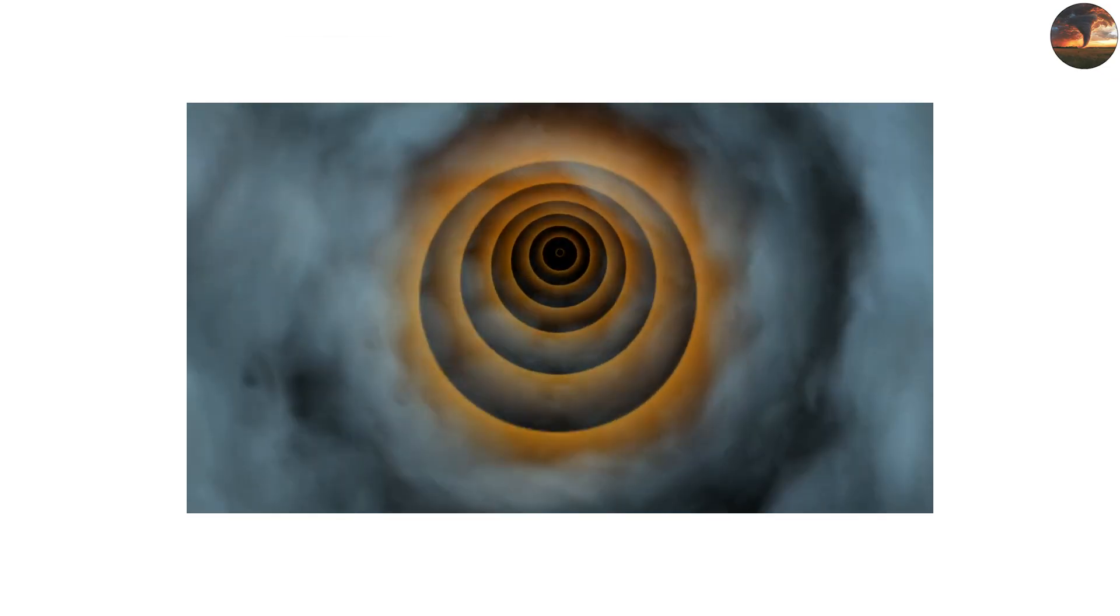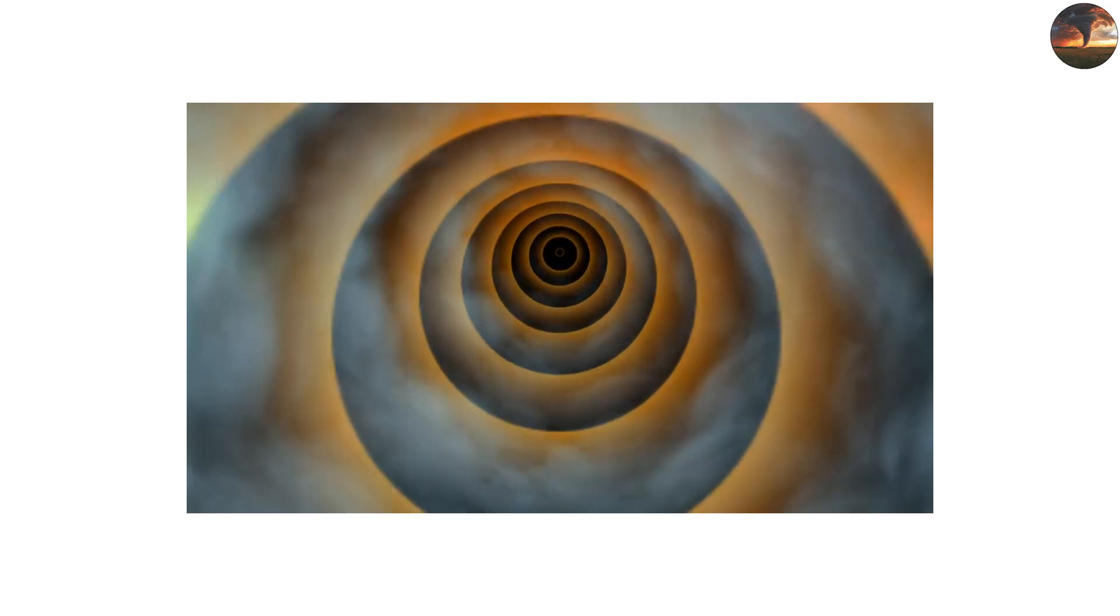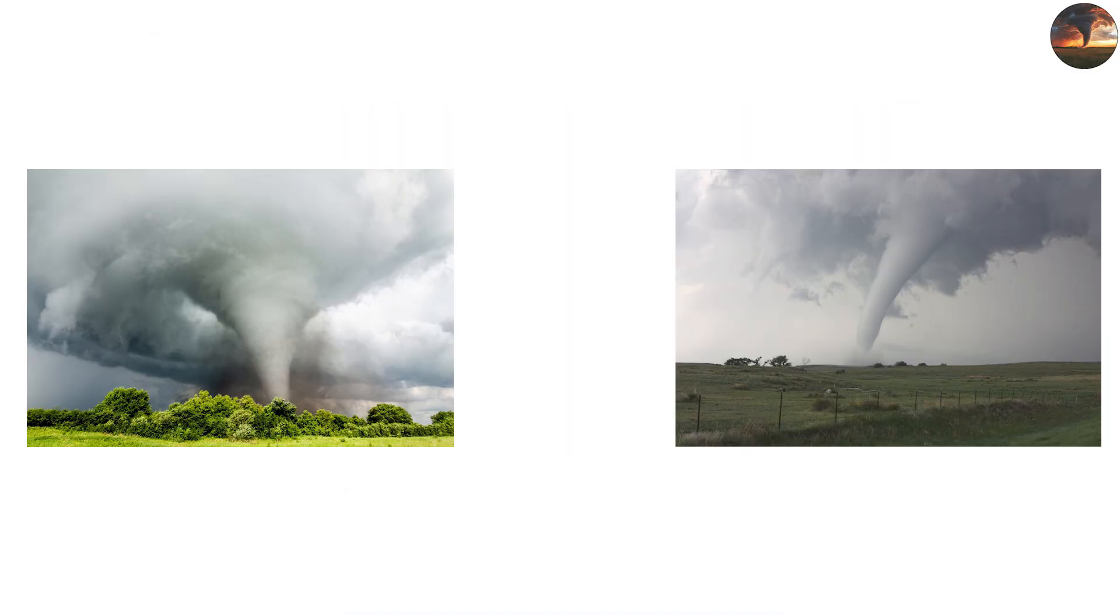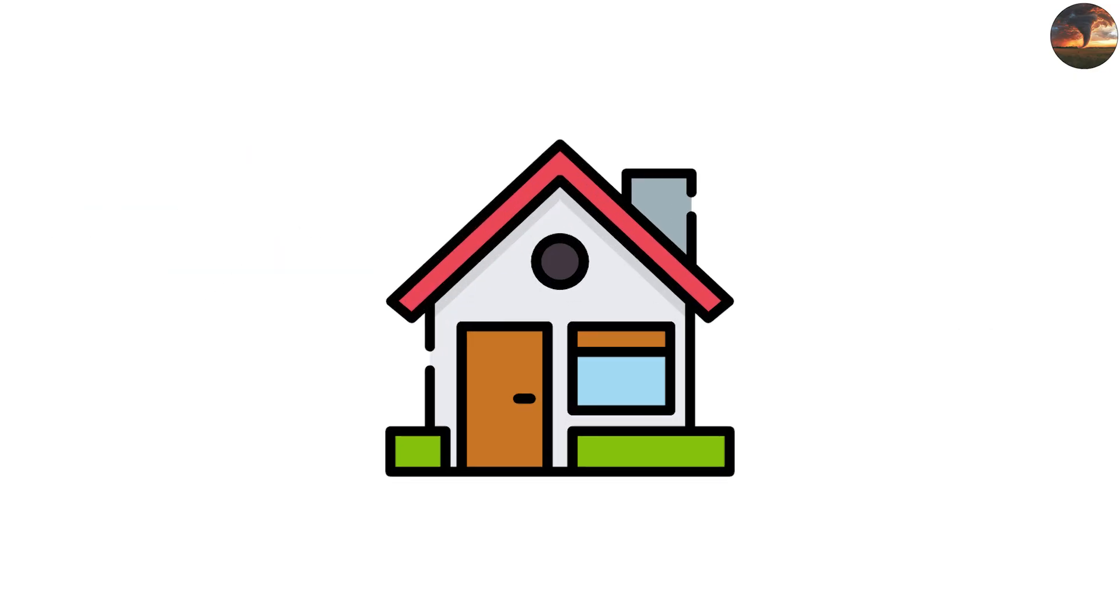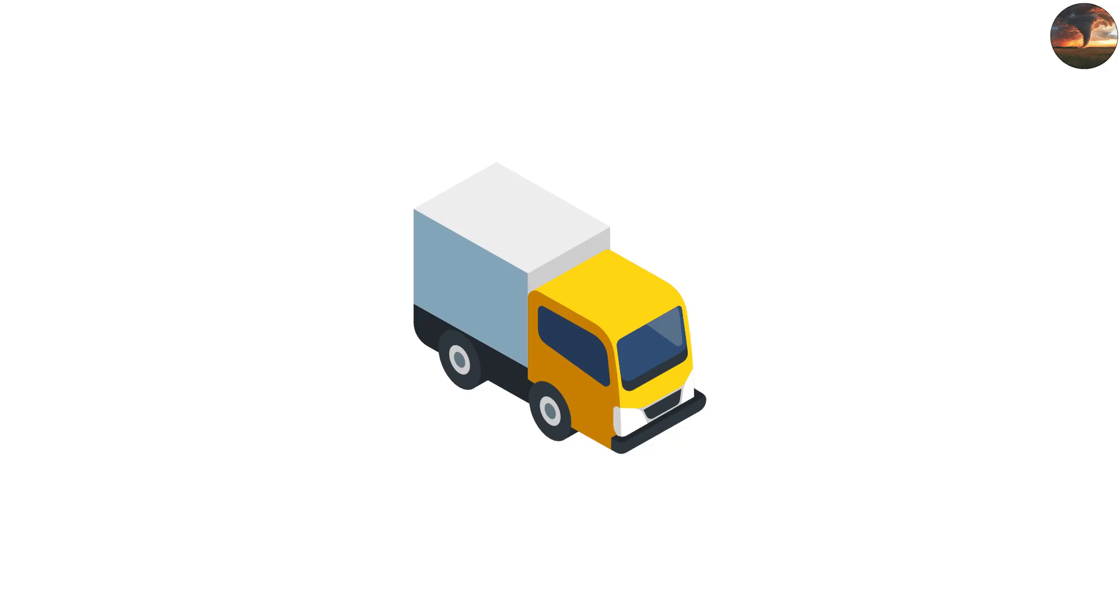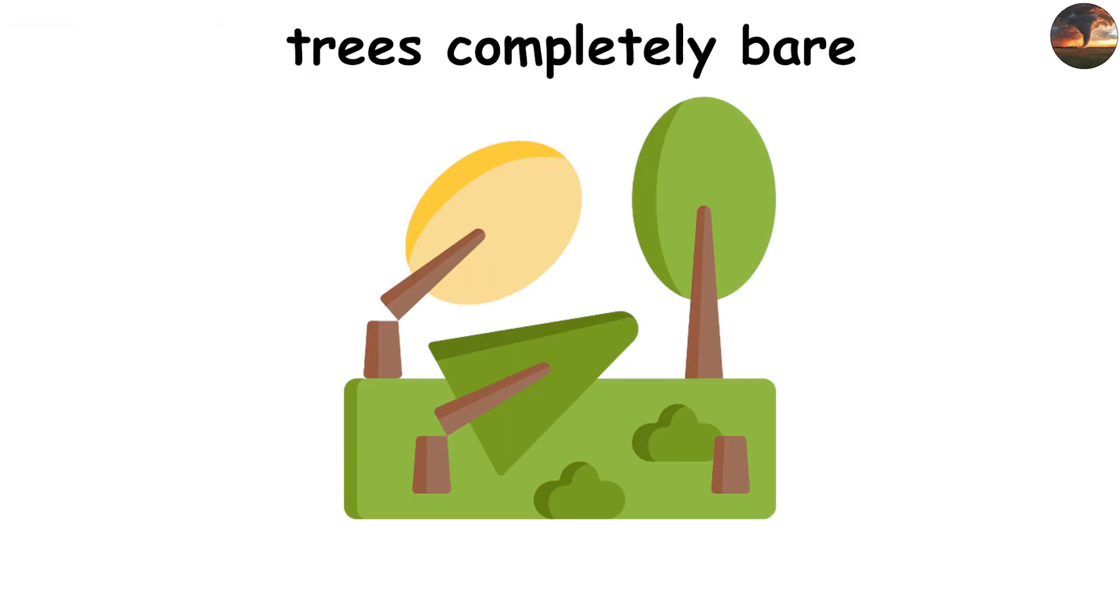This is the swirling ring around the eye where the tornado's most violent winds reach their peak strength. In EF-4 or EF-5 tornadoes, winds here can exceed 200 miles per hour, enough to lift entire houses off their foundations, toss trucks through the air like toys, and strip trees completely bare.